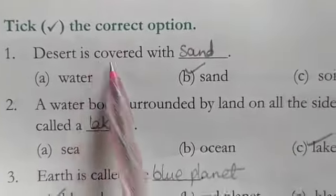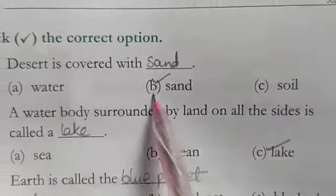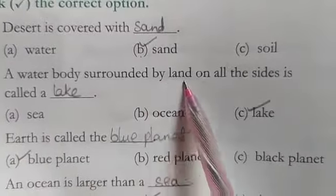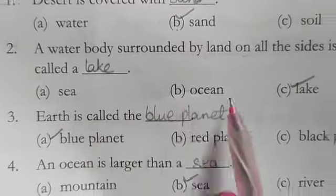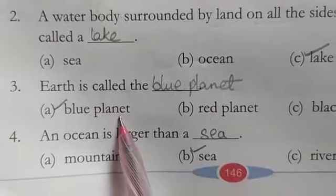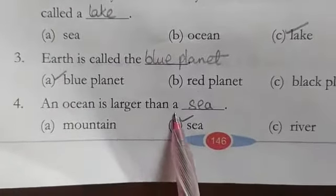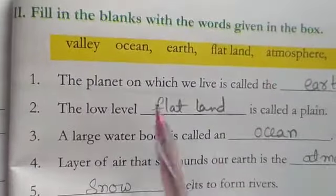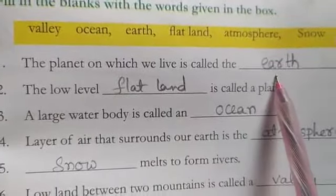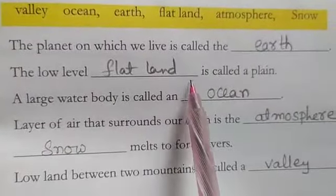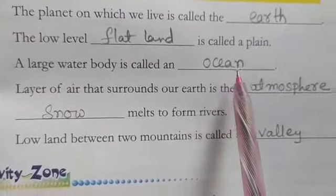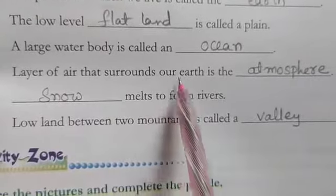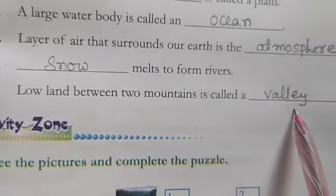Take the correct option: Desert is covered with sand. A water body surrounded by land on all sides is called a lake. Earth is called a blue planet. An ocean is larger than a sea. Fill in the blanks: The planet on which we live is called the Earth. The low level flat land is called a plain. A large water body is called an ocean. The layer of air that surrounds our Earth is the atmosphere. Snow melts to form rivers. Low land between two mountains is called a valley.